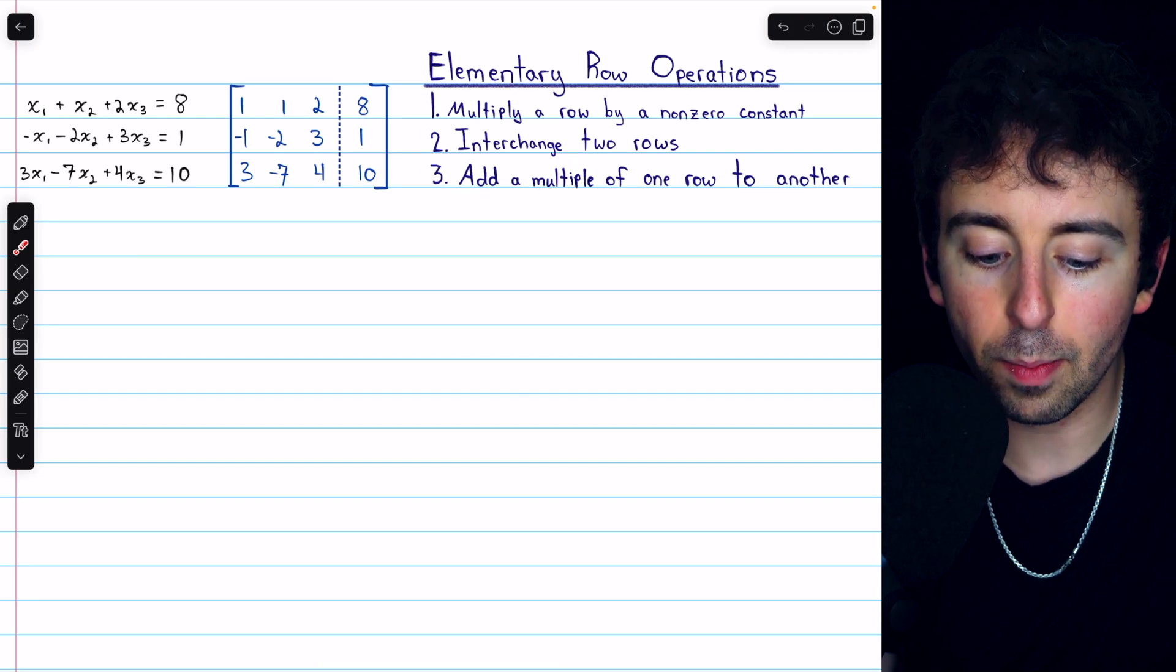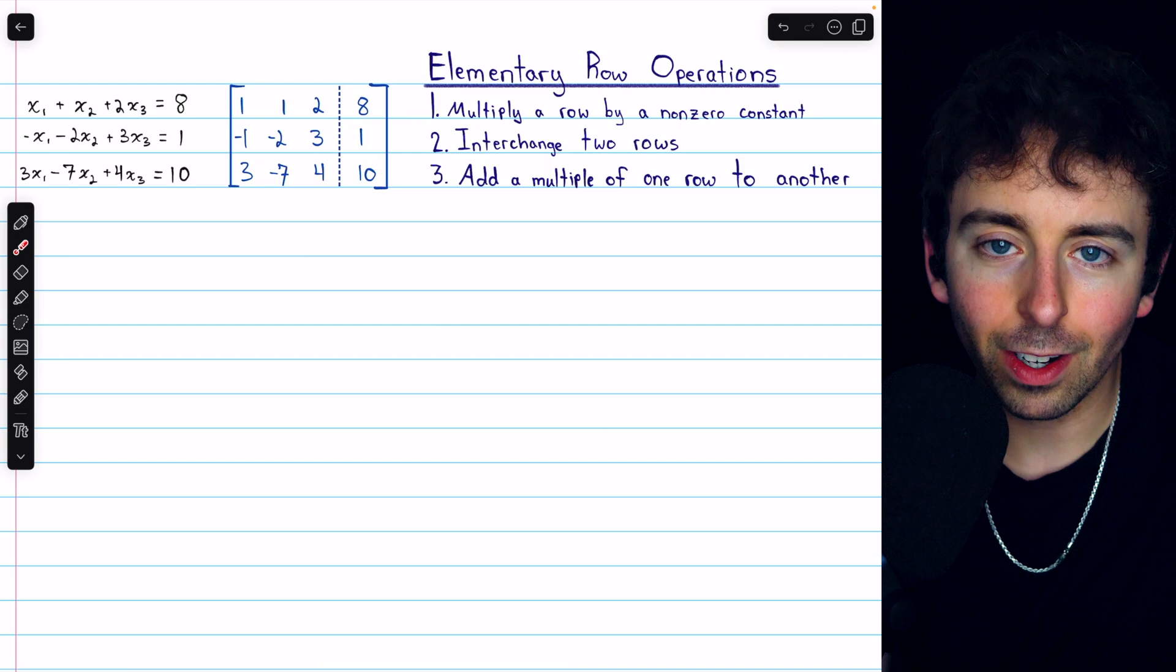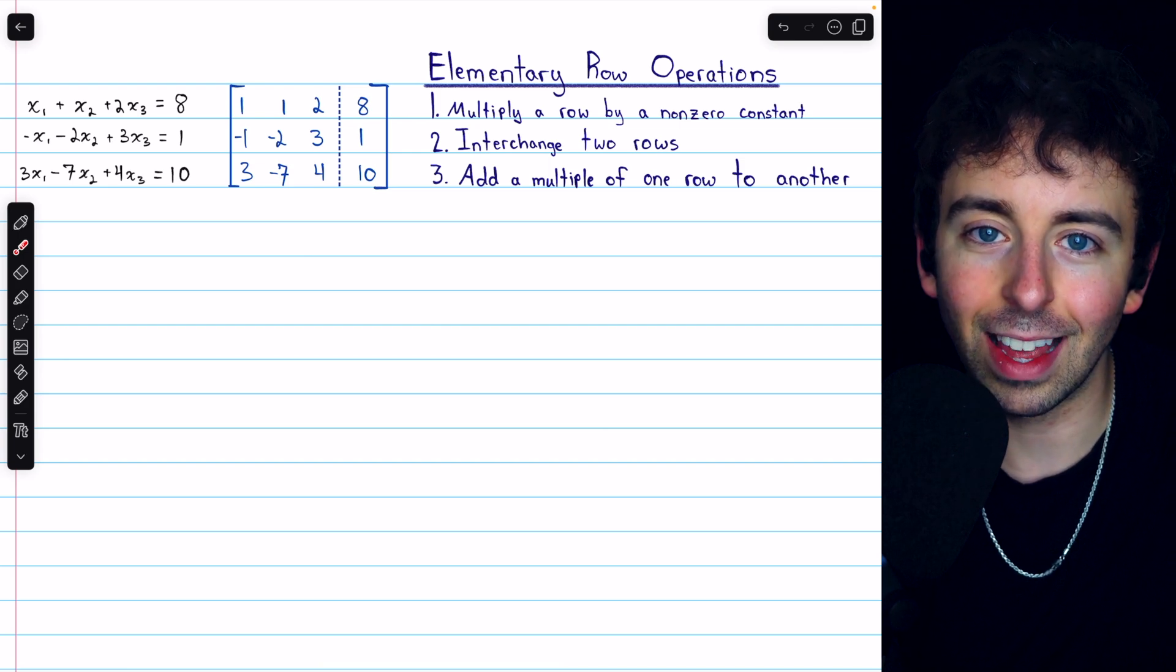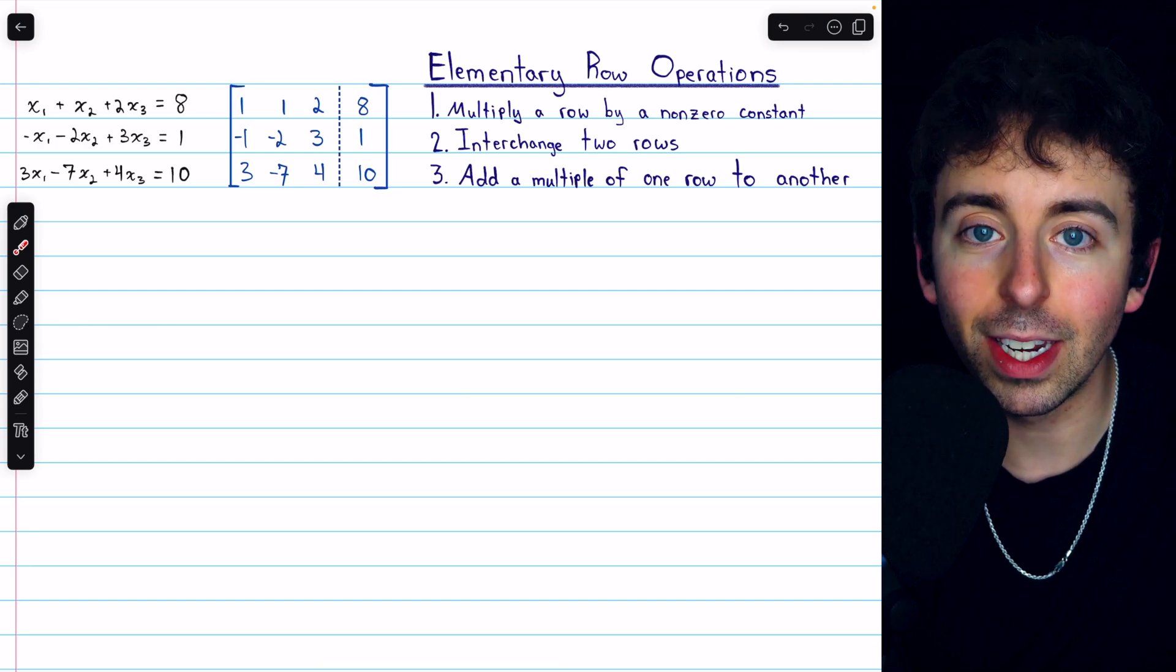So we're going to perform these operations to get this matrix in what we call reduced row echelon form, which looks like what we just saw a moment ago.